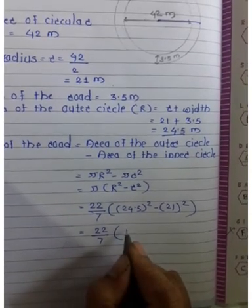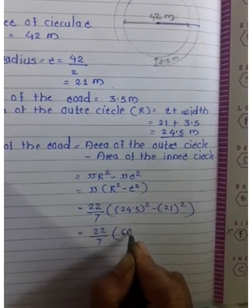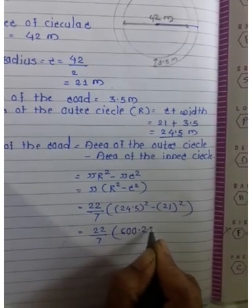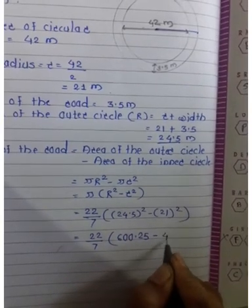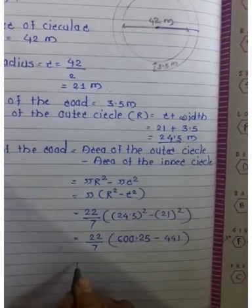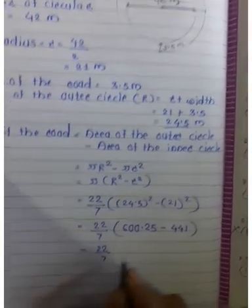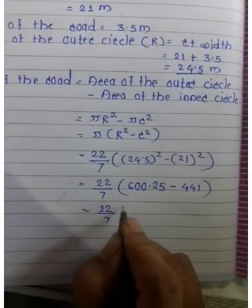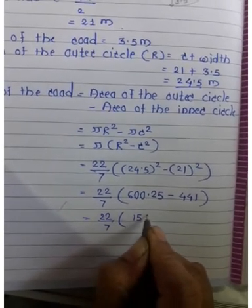Square of 24.5 is 600.25. Square of 21 is 441. When we subtract, we get 159.25.